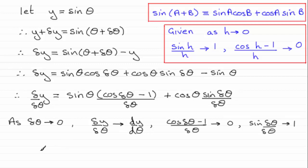So therefore what we've got is that dy by d theta is equal to cosine of theta. So you can see that by differentiating sine theta with respect to theta, the result then is cosine theta.